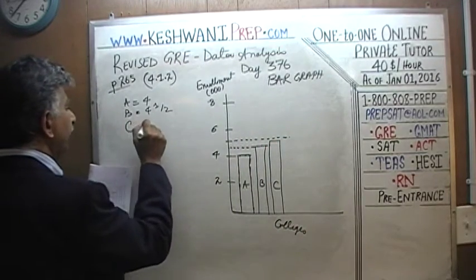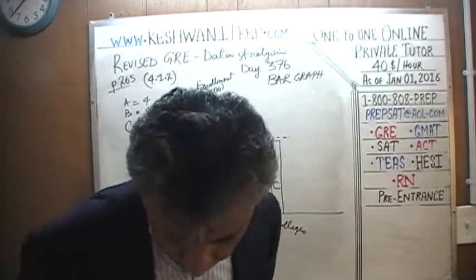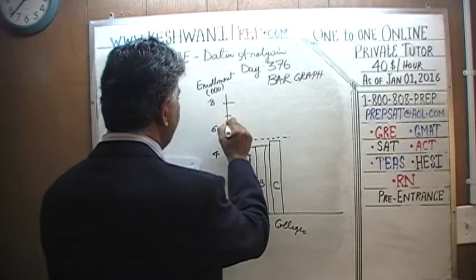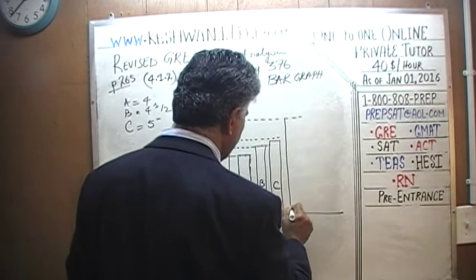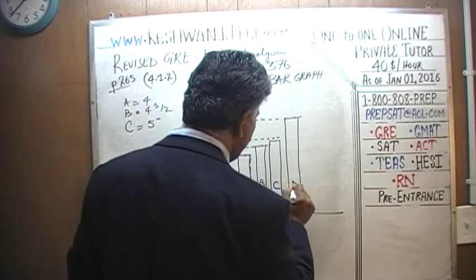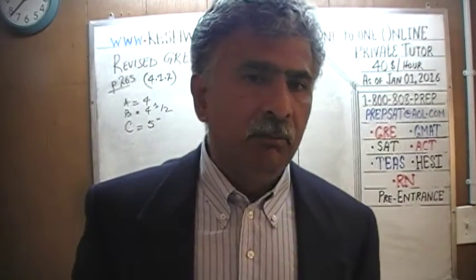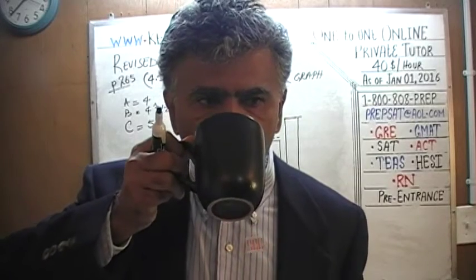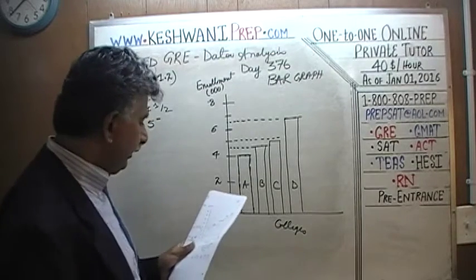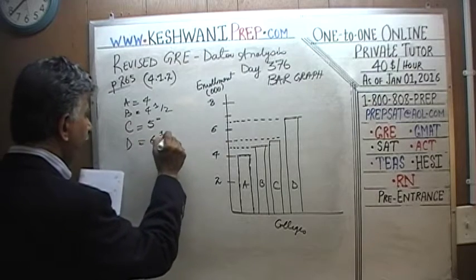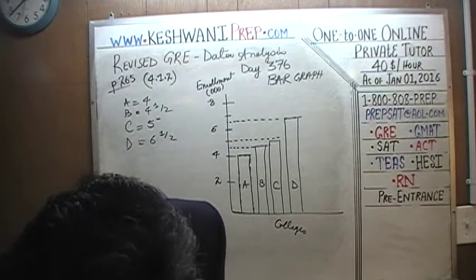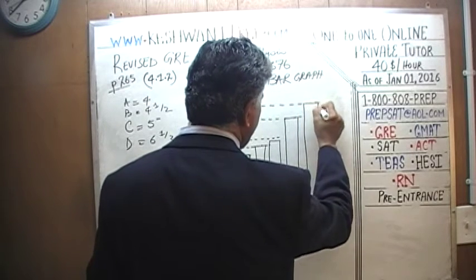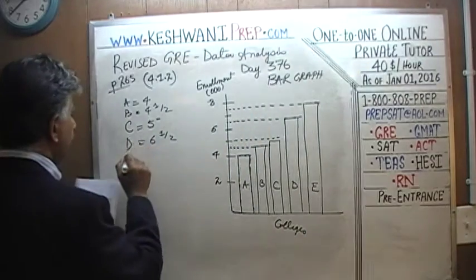College D looks like 6 and a half. You should reproduce the graph yourself, because even though you may think you understand, reproducing it manually by hand helps you understand it intimately — the nitty-gritty of it. So D was 6 and a half. Finally, College E looks like 7 and a half.